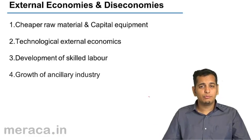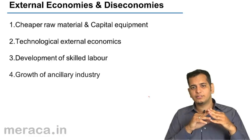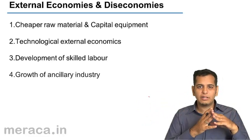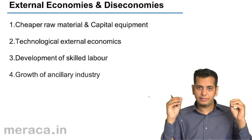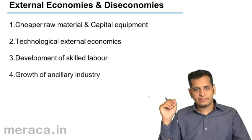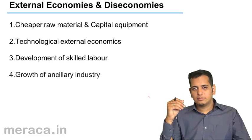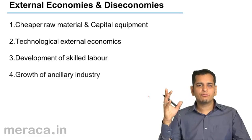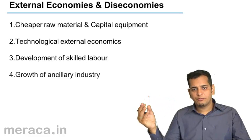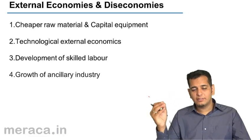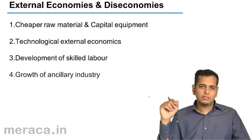Fourth is growth of ancillary industry. Ancillary industry means that industry which is related to your industry — either you get raw materials from it or you supply to it. Any industry directly or indirectly related to your own product or industry is an ancillary industry. For example, if you are in the business of manufacturing bikes, ancillary industries would include iron and steel, tire manufacturing, and nuts and bolts manufacturing.